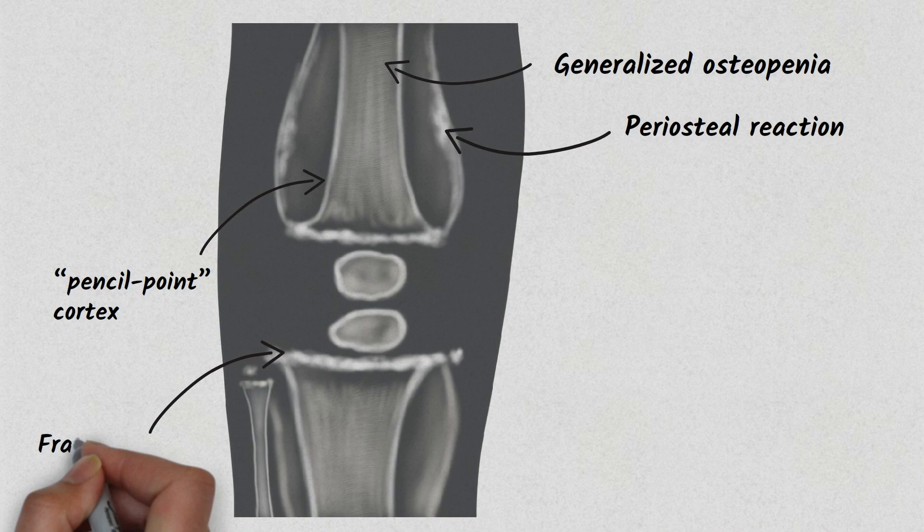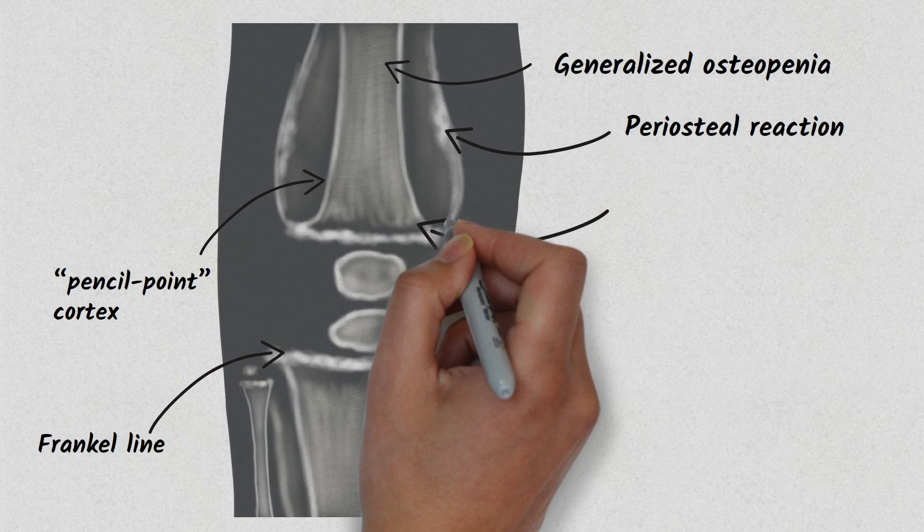Just underlying the Frankel line, you can appreciate a radiolucent band-like area. This metaphyseal band is called Trümmerfeld zone.